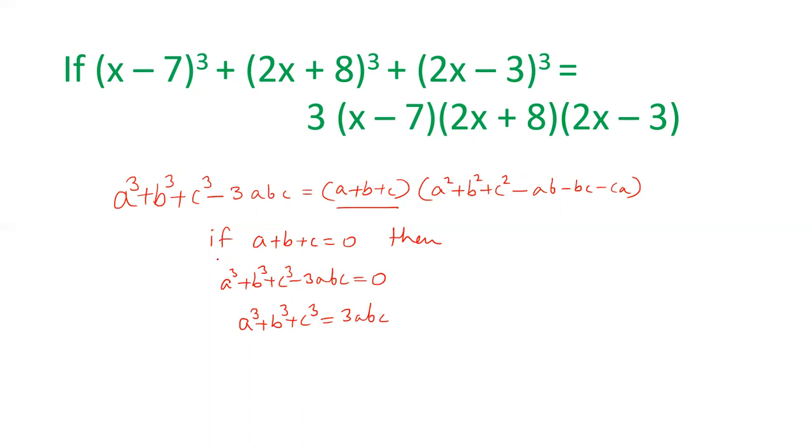This is the condition you should remember: if a + b + c = 0, then a³ + b³ + c³ = 3abc, and vice versa. So this result works both ways: if a³ + b³ + c³ = 3abc, we can say that a + b + c = 0.